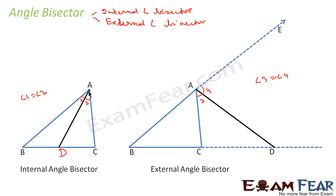So what have we done? We drew the same triangle ABC. In the first case, we drew the internal angle bisector: line AD such that angle 1 is equal to angle 2. In the second case, we drew the external angle bisector: we extended to get the external angle and drew line AD such that angle 3 is equal to angle 4. Here AD is the external angle bisector, and here AD is the internal angle bisector.